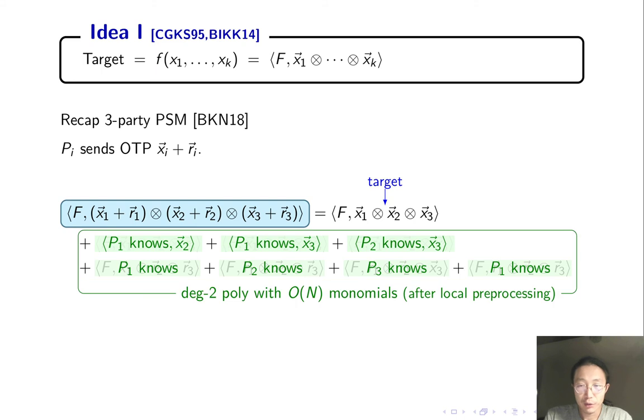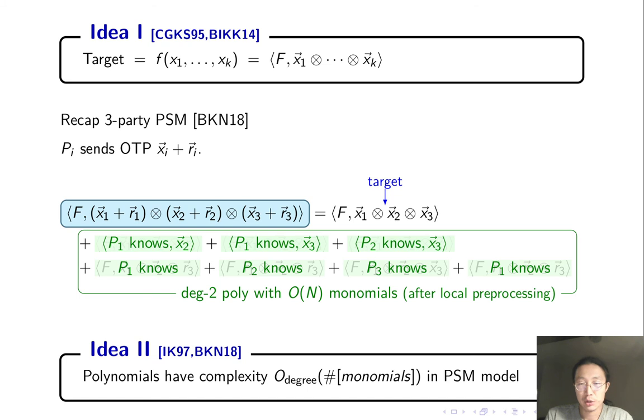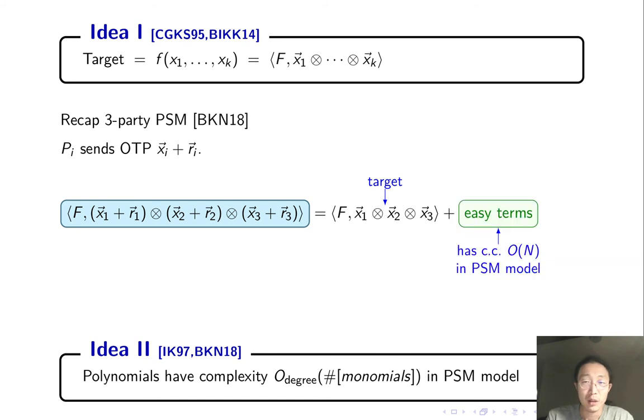So the sum of these terms is a polynomial with O(n) monomials. As shown by Ishai-Kushilevitz, to compute a polynomial in PSM model, the communication is no more than the number of monomials. That is, the sum of all green terms can be computed with communication O(n). This explains why we call them easy. Once the referee learns the sum of the easy terms, he can compute the target by subtracting the easy terms from the term on the left. And it's easy to show that the referee learns no other information.